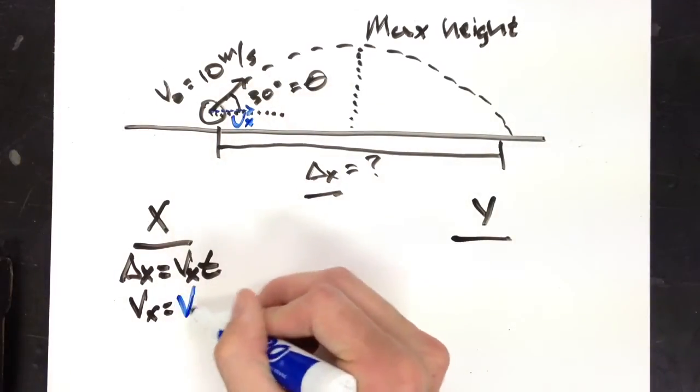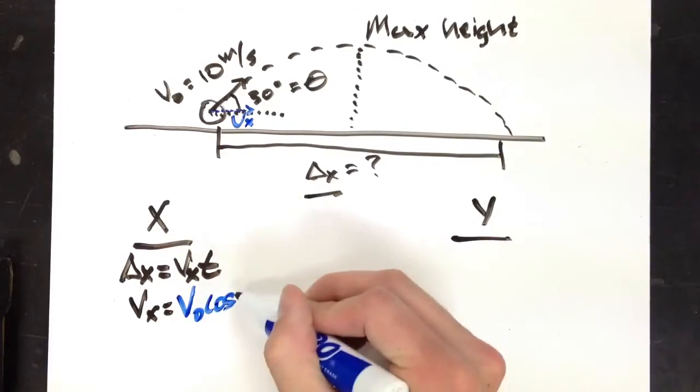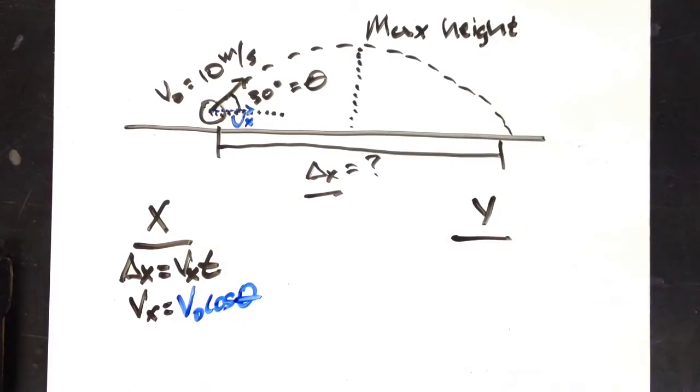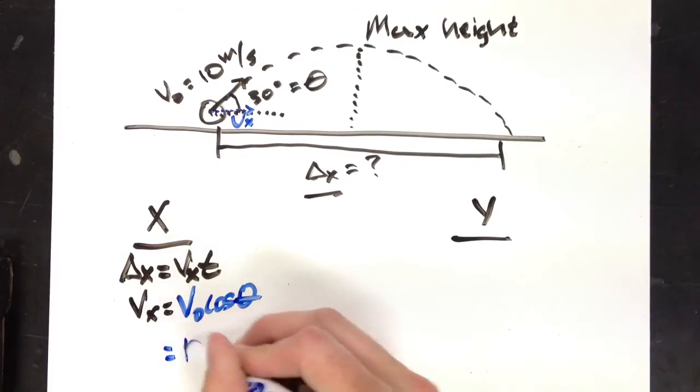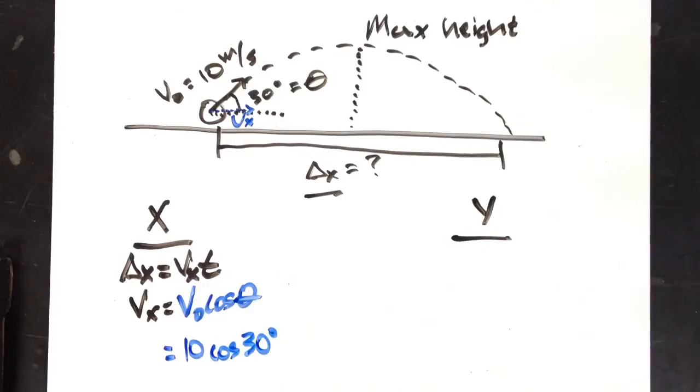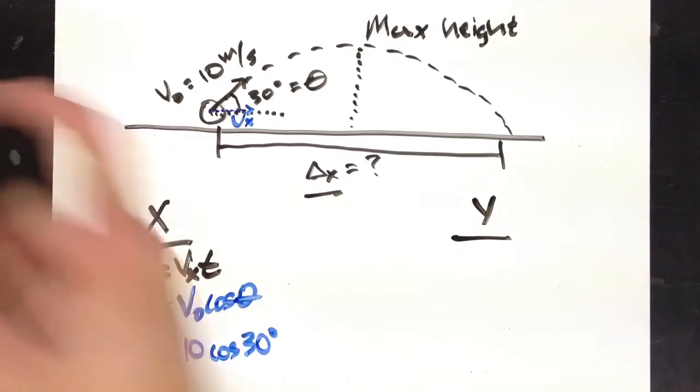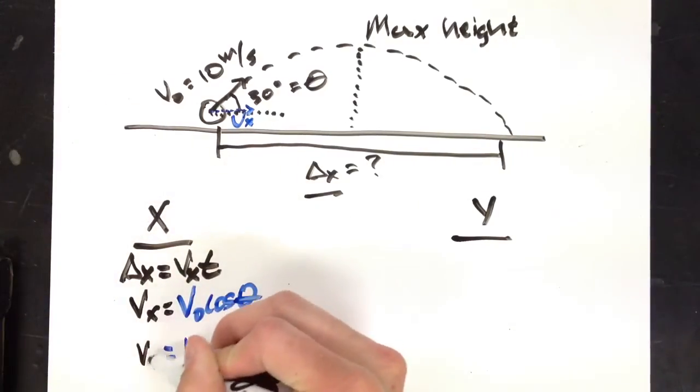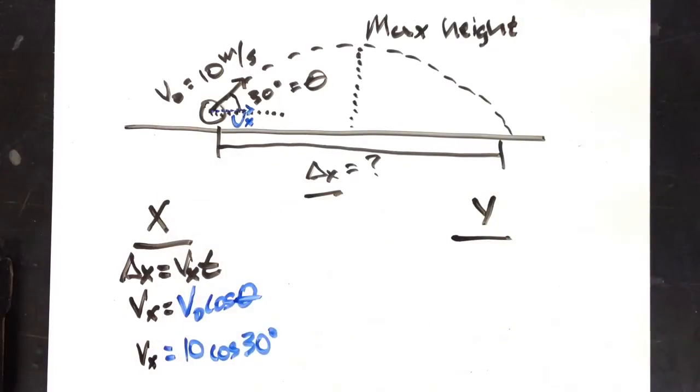Well, that is going to be 10 times cosine of 30 degrees. Now, that solves my vx problem. I know what vx is. But how am I going to get time?